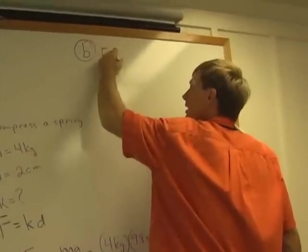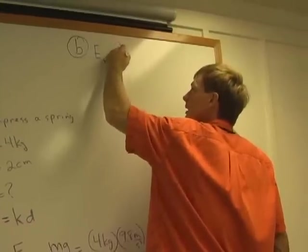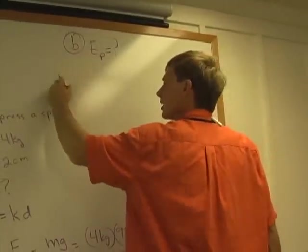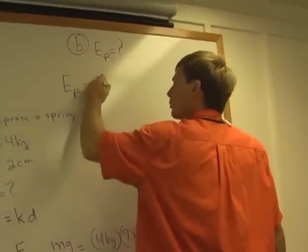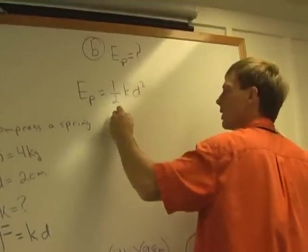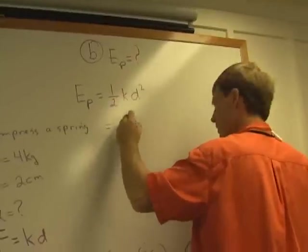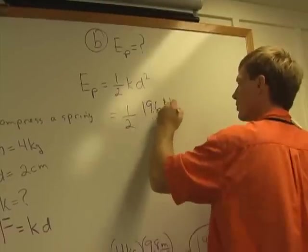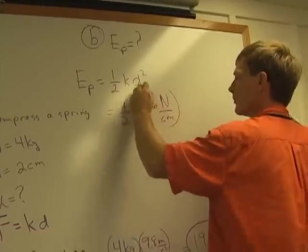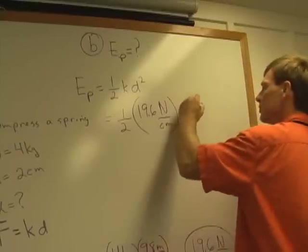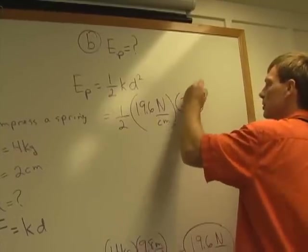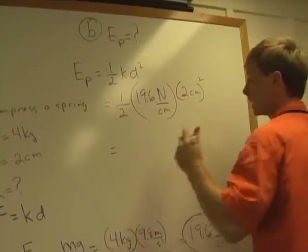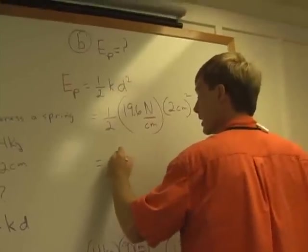B, what's the potential energy that's been stored in that spring? Well, let's see. Potential energy is 1 half times the spring constant times the displacement squared, which is 1 half times 19.6 newtons per centimeter times 2 centimeters squared, which is going to be, let's see, 39.2.